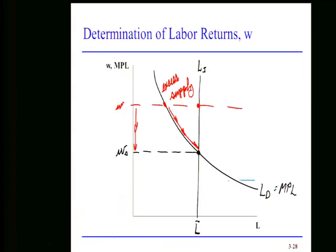Now let's think about the opposite situation. If the real wage is below its equilibrium level, we have excess demand. Competitive pressures in the marketplace will force the real wage up. As the real wage rises, fewer people will pass the hurdle of having the right marginal product of labor, and the quantity demanded for labor will decline until we get back to equilibrium.